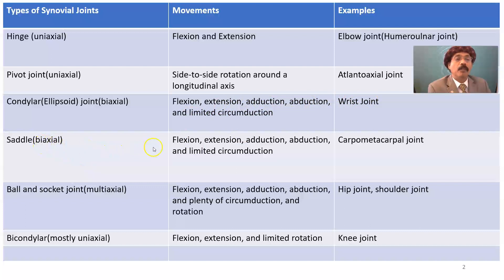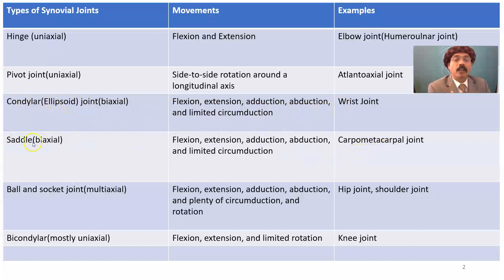Saddle joint also has biaxial movement: flexion, extension, adduction, abduction, and limited circumduction. Example: the carpometacarpal joint.